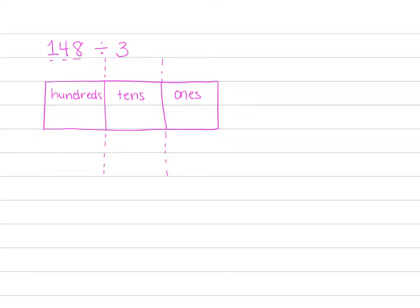Let's write our problem inside. We have 148 divided by 3. 148 divided by 3. Pause the video if this is not done. All right, we have 1.